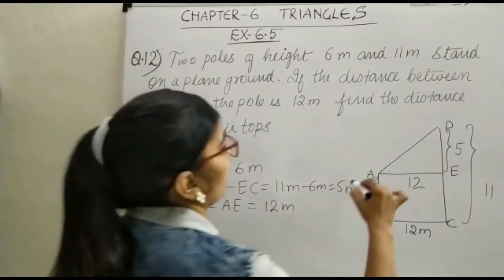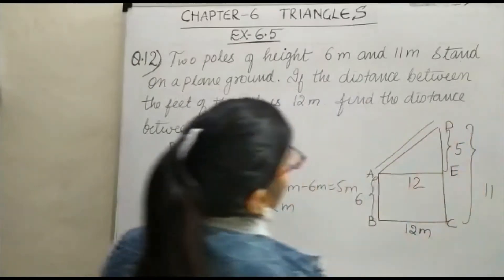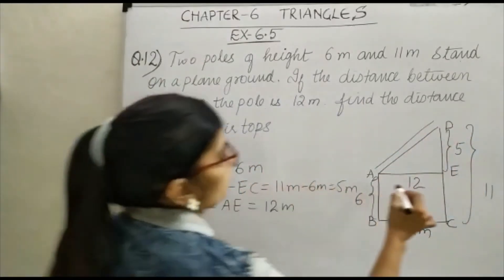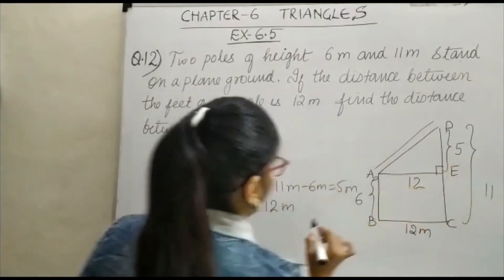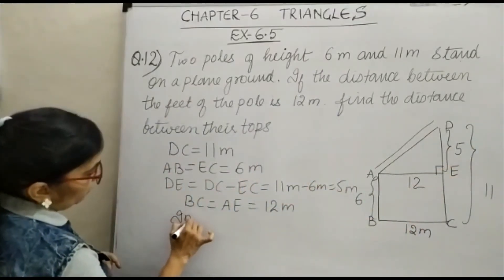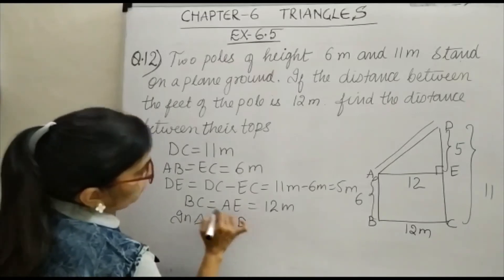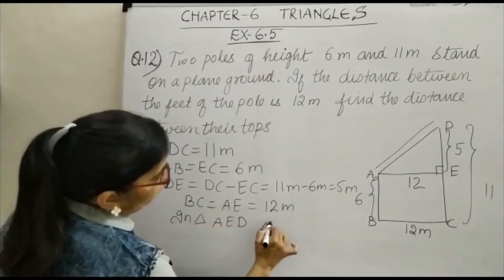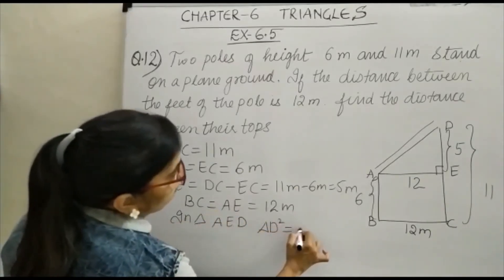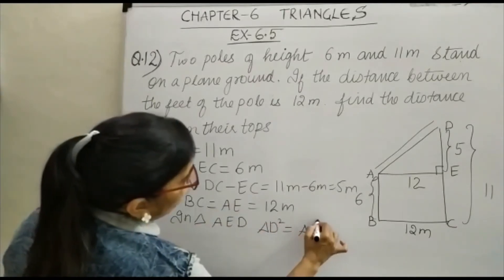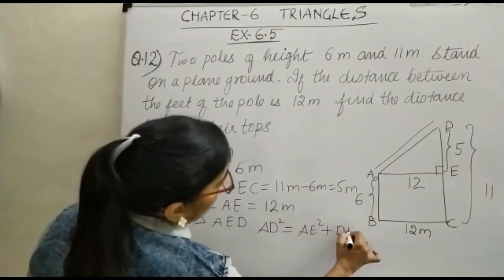We are supposed to find out AD. AD is your distance between their tops. So this is 90 degrees below. In triangle AED, AD square is equal to AE square plus DE square.